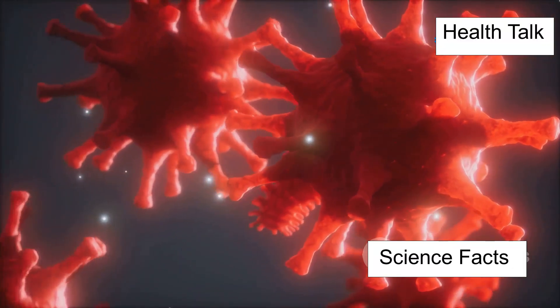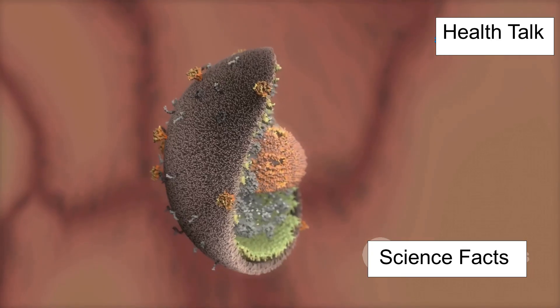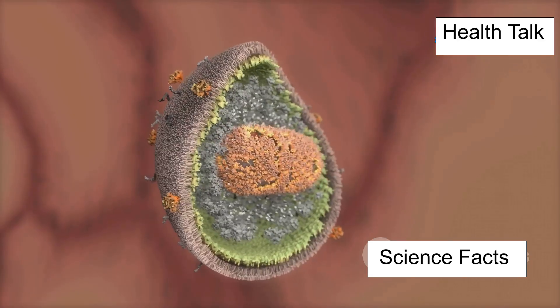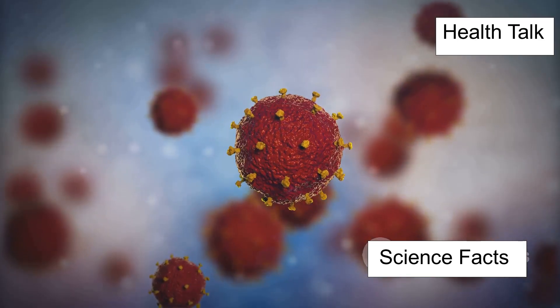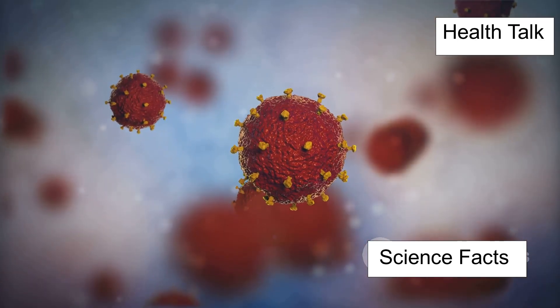Why is HIV so tough to beat? It's because the virus creates what's called a latent reservoir. It hides deep inside your immune cells, silent and invisible, even when treatment wipes out nearly everything else.